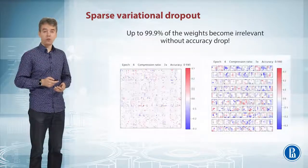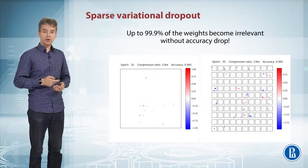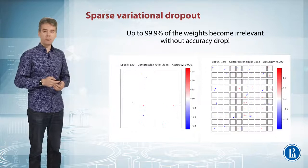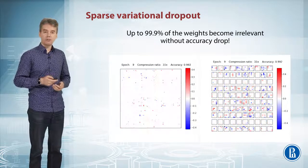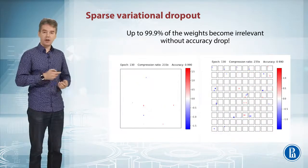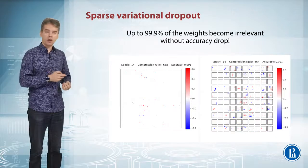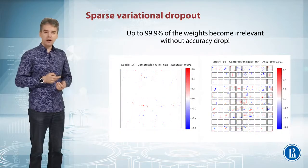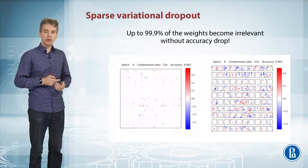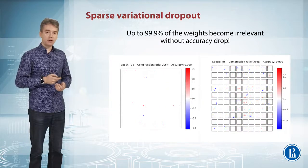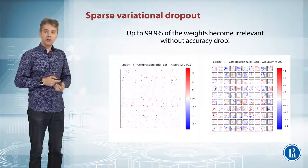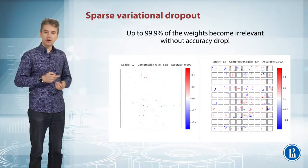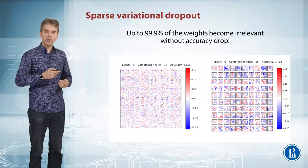And surprisingly, this procedure works quite well. On this picture you can see the behavior of convolution kernels from convolutional layers and a fragment of a weight matrix from fully connected layers. You can see that as training progresses, more and more weights and coefficients in the convolution kernels converge to zero. The compression factor exceeds 200, and pay attention that the accuracy does not decrease — we keep the same accuracy while effectively compressing the whole network hundreds of times.